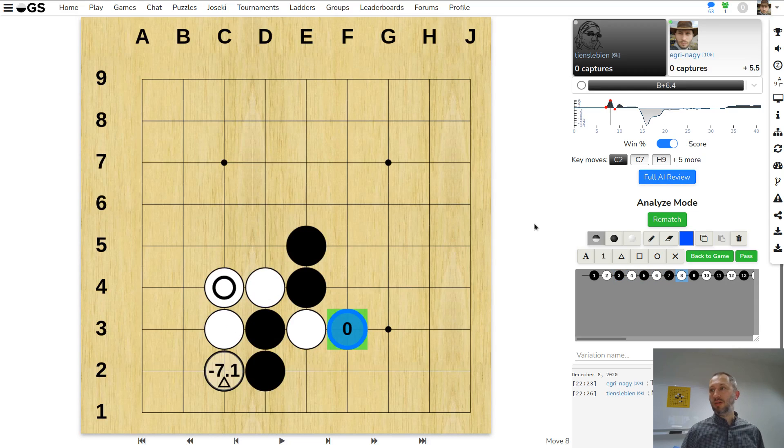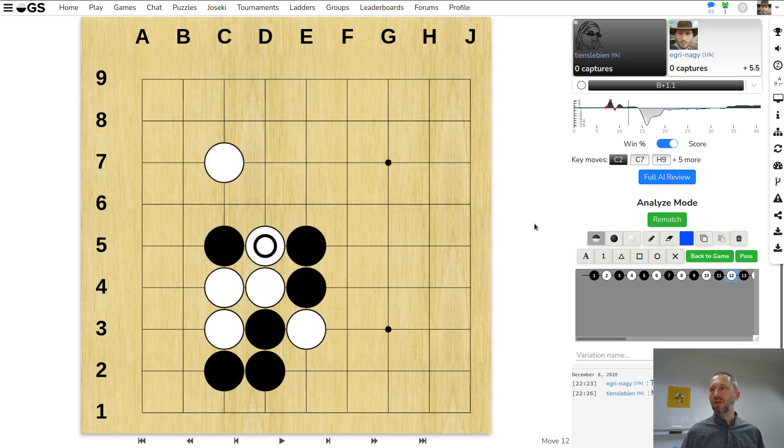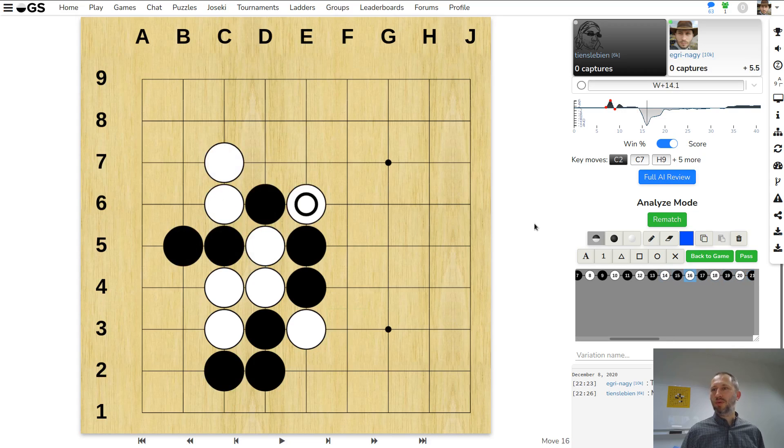Here black is expected to win by almost six and a half points, but the best moment for white, white is winning by 14 points. But again, this is not the final result, this is the estimate.